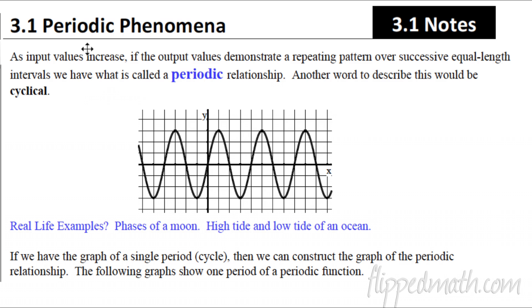Here's what the definition says. As input values increase, if the output values demonstrate a repeating pattern over successive equal length intervals, we have what's called a periodic relationship. This means if you go a certain distance and notice a pattern, like this sine curve going up and down, and then it repeats over the same distance for the x, that is called a periodic relationship. Another word to describe this would be cyclical.